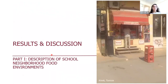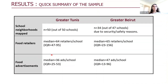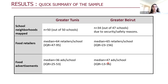Moving to the results and discussion. I will start with a quick summary of our sample. We were able to map the neighborhood of all 50 schools in Greater Tunis. However, we only mapped the neighborhood of 34 out of 47 schools in Greater Beirut due to security and safety reasons — in some areas we were not given permission to collect information. The median count for food retailers was 64 per school in Greater Tunis and 65 per school in Greater Beirut. For food advertisements, the median count was 36 ads per school in Greater Tunis and 47 ads per school in Greater Beirut.